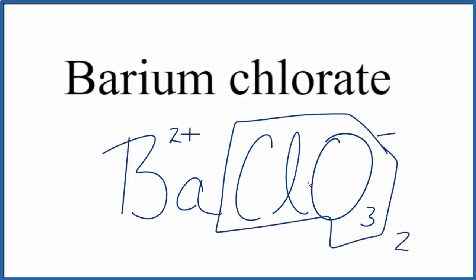So we need 2 of these chlorate ions, 2 times 1-. That'll give us 2-, that'll balance out the 2+. That'll give us a net charge of 0.